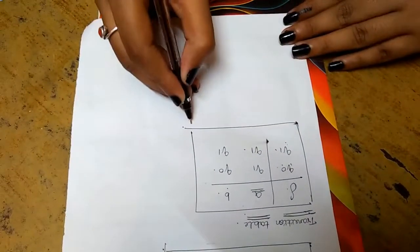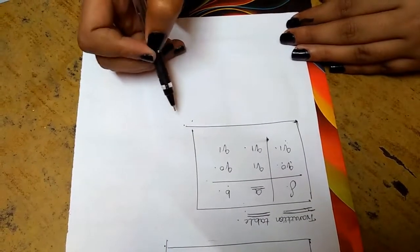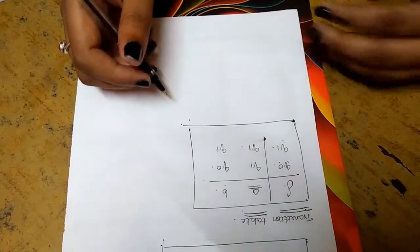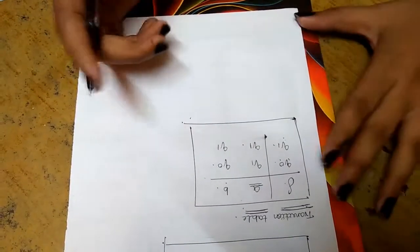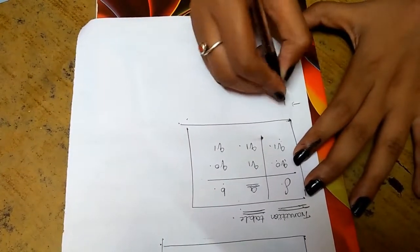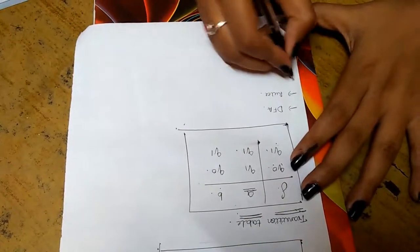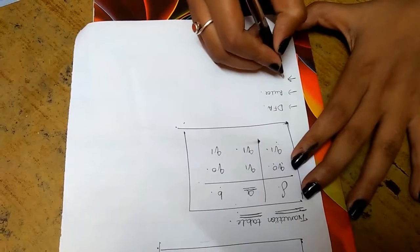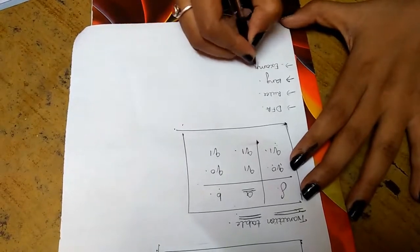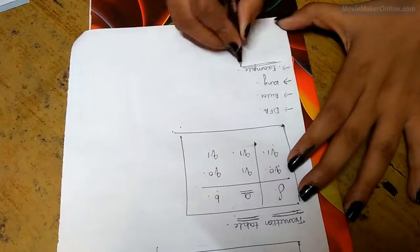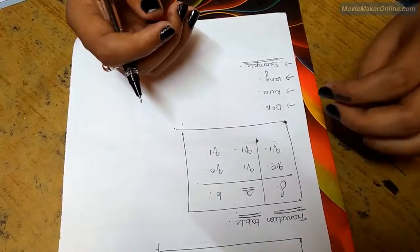This is a very simple example to draw a DFA which accepts strings of A and B having at least one A. In this module, we discussed what is a DFA, the rules to consider while designing a DFA, the language accepted by DFA, and solved one simple example. In our next module, let us discuss a more complicated example of solving a DFA using the pattern recognition method. Thank you.